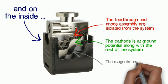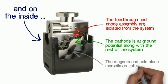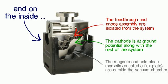And external to those are magnets and pull pieces, sometimes called flux plates, that are on the outside of the vacuum chamber.